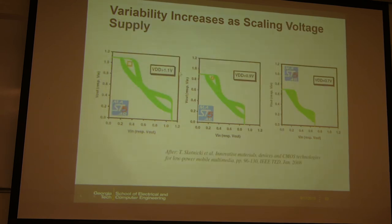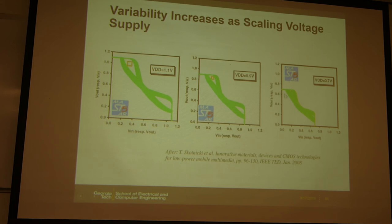Also at the same technology node, as we shrink VDD — for example from 1.1 to 0.7 volts — we see a shrinking of the noise margin. When we consider the variability as well, it becomes even more challenging. So scaling the supply voltage combined with increased variability makes noise margin a critical problem.